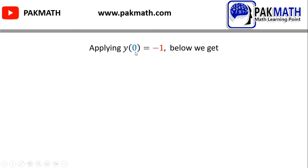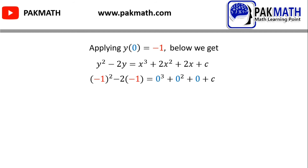From the initial condition we get x = 0 and y = −1. Substituting into the equation: (−1)² − 2(−1) = 0³ + 0² + 0 + C, which gives 1 + 2 = C. So the value of C = 3.